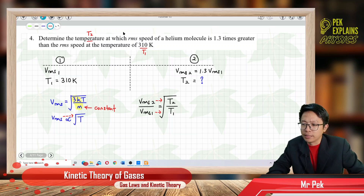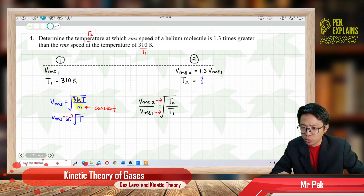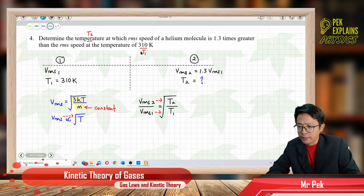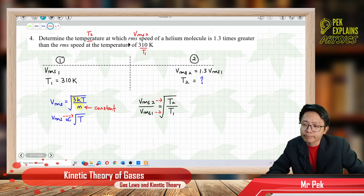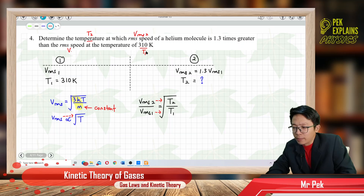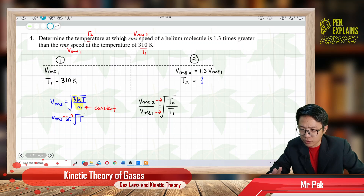And at which root mean square speed? The next thing given is about the root mean square speed. We have two different root mean square speeds. The root mean square speed at temperature 2 is 1.3 times greater than the root mean square speed at temperature 1. So VRMS2 is 1.3 times greater than VRMS1 — different root mean square speeds.